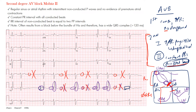Causes include anterior MI, idiopathic conduction system fibrosis, mitral valve repair, myocarditis, Lyme disease, rheumatic heart disease, amyloid, lupus, sarcoid, and hyperkalemia. Medications that slow conduction at the AV node — such as beta blockers, digoxin, calcium channel blockers, and amiodarone — can also cause this. Clinically, these patients are at greater risk of hemodynamic compromise than Mobitz type 1, at risk of severe bradycardia and progression to complete AV block.